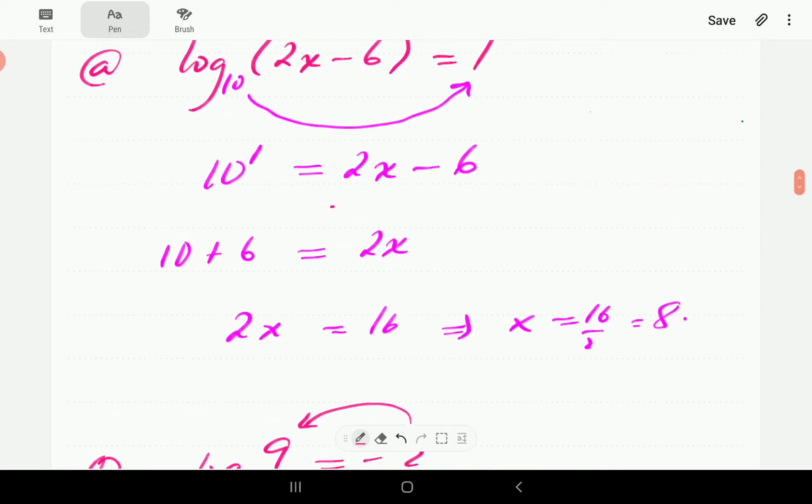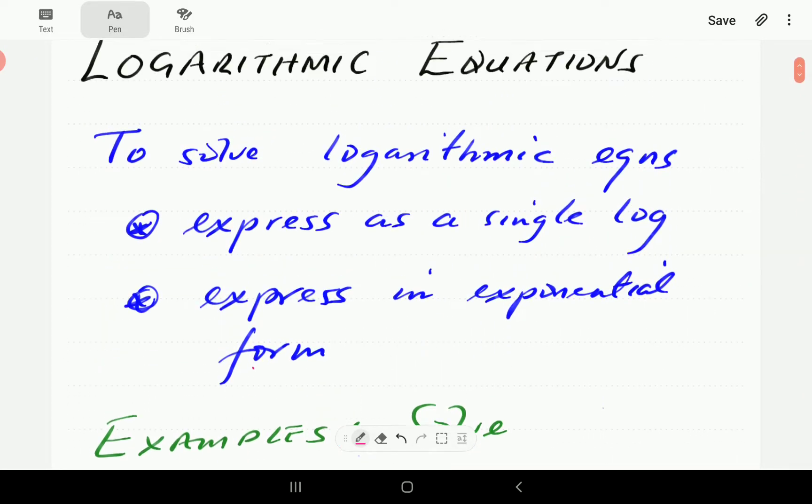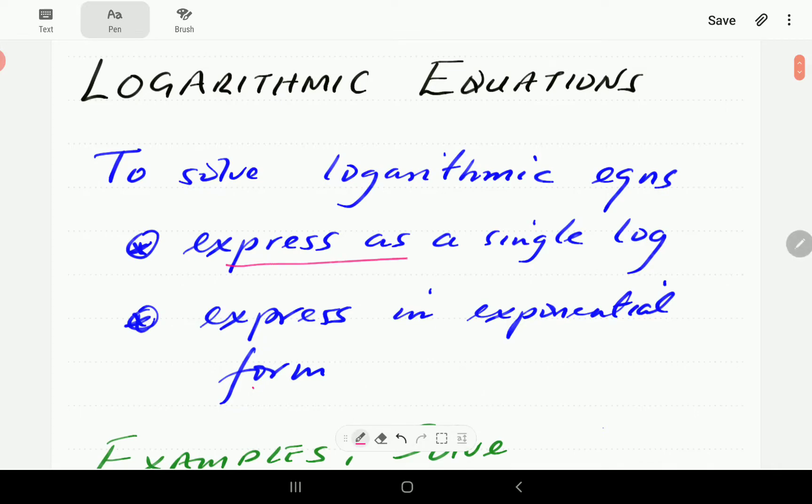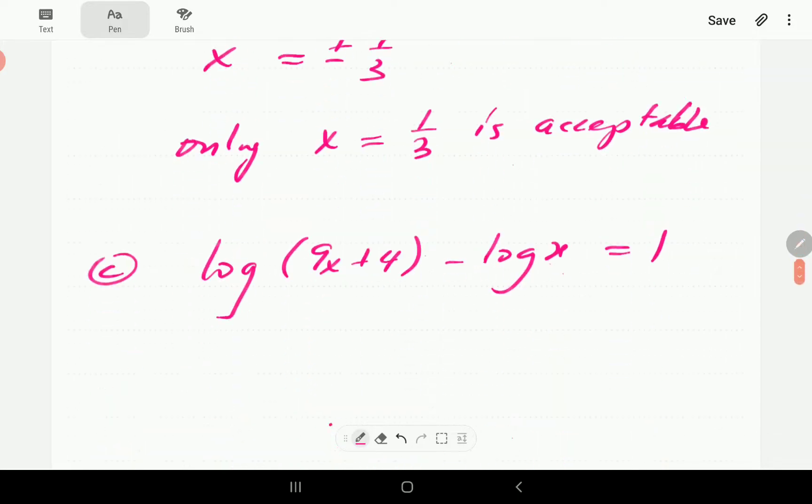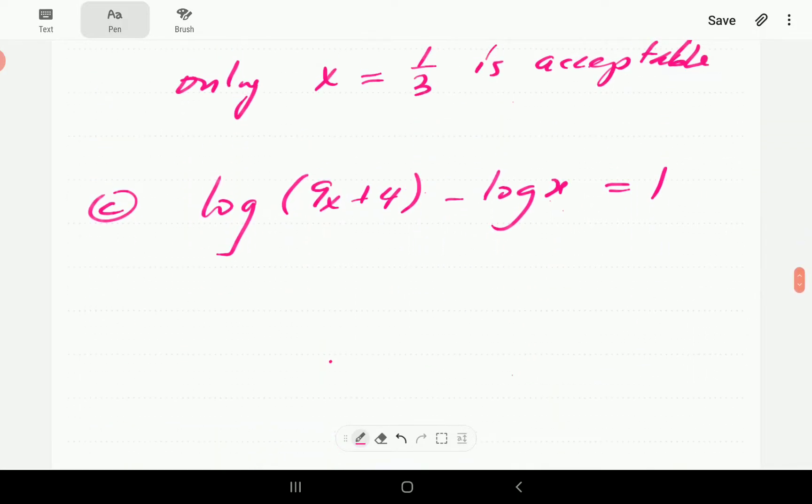In this case, we've got the situation where we've got two log terms. So the first thing we're going to do is to express those as a single log. So this is going to be log of 9x plus 4 all divided by x is equal to 1.